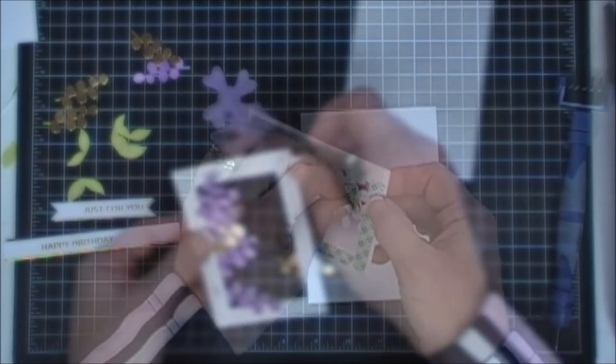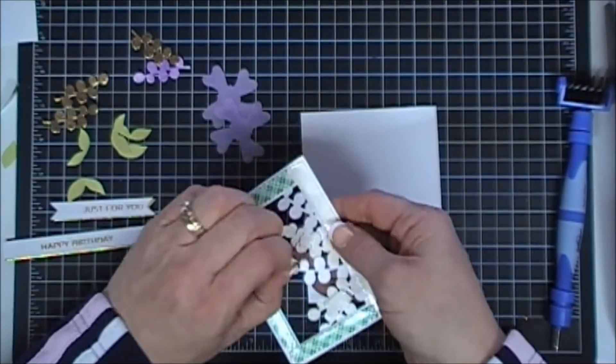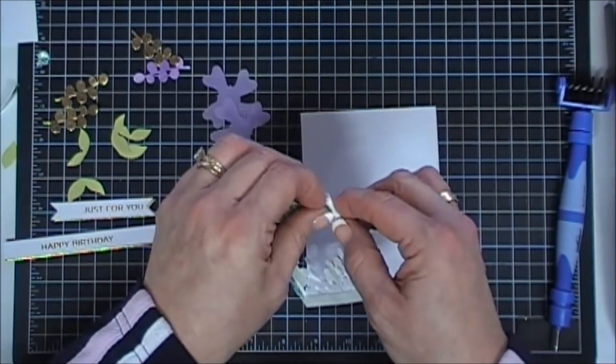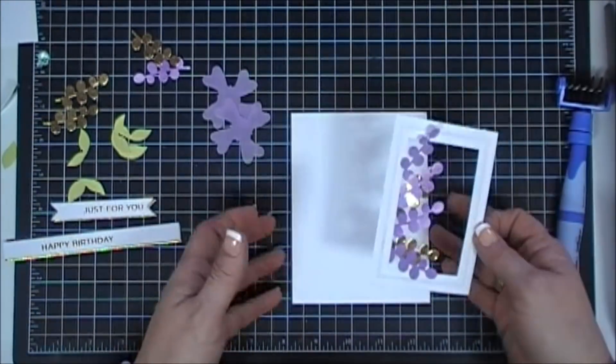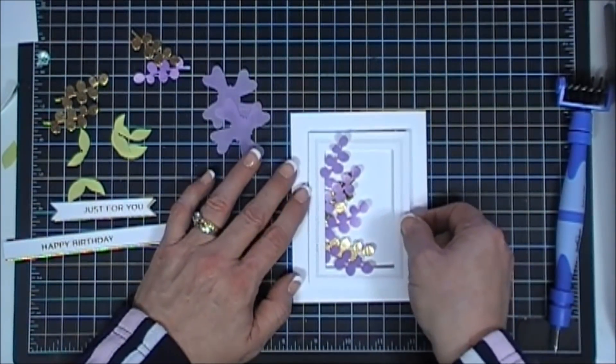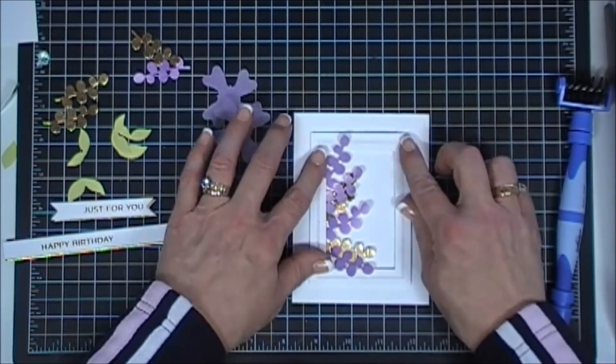I added some foam tape behind my frame and a few behind my flourishes. We'll just place this in the center of our card base. I think the purple and the gold with the green on white is just stunning. I love that.